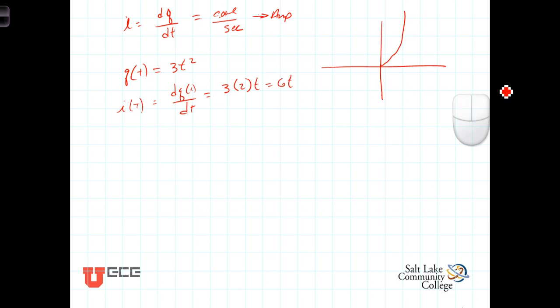The current, so this would be Q of t, and the time rate of change of this would then be I of t, which is equal to 6t. The current, the number of Coulombs per second is increasing. It's not a constant current, it's increasing with time at a rate of 6t.